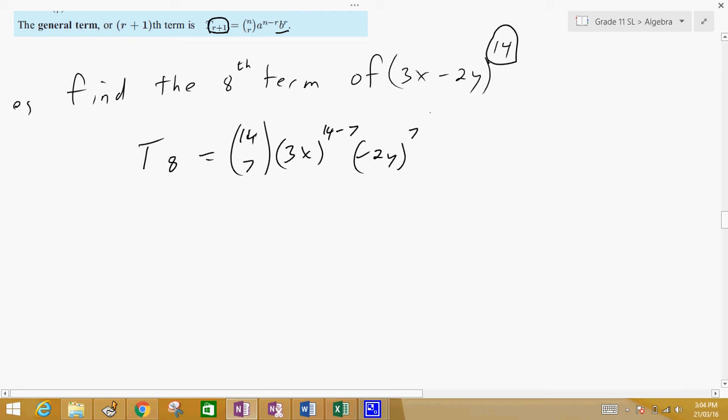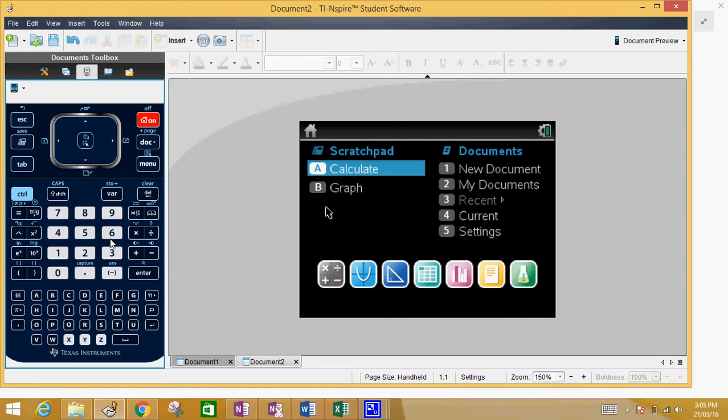So, how you answer this question is, getting out your calculator. So, we wanted you to figure out first what was 14 choose 7. So, if you're doing that, we're going to go calculate.